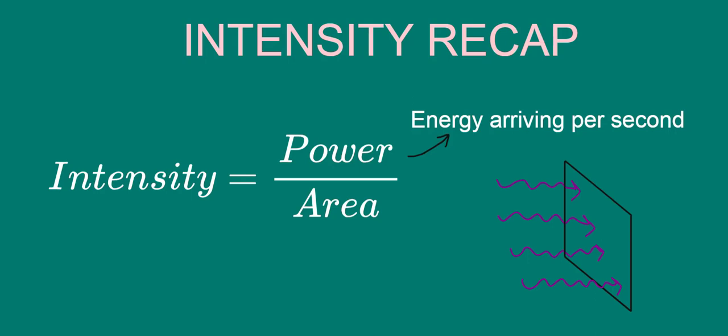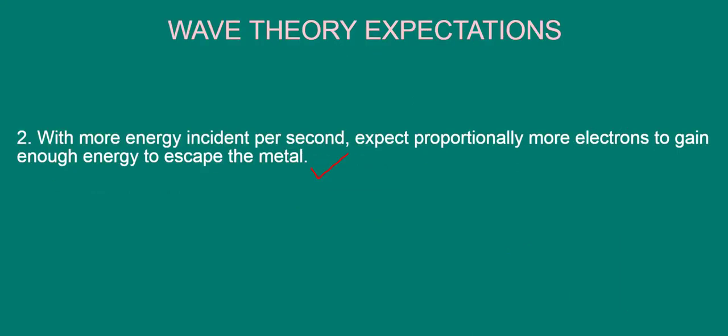Now, there are various ways by which you can increase the intensity and therefore have more energy arriving per second onto the plate. This appears to nicely explain observation 2. With more energy incident per second, we would expect proportionally more electrons to gain enough energy to escape the metal.